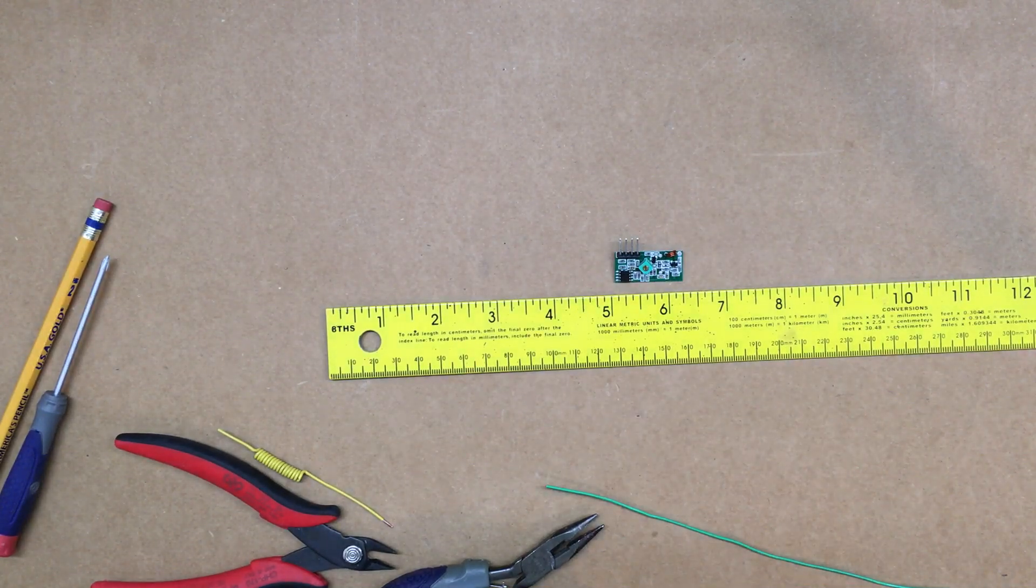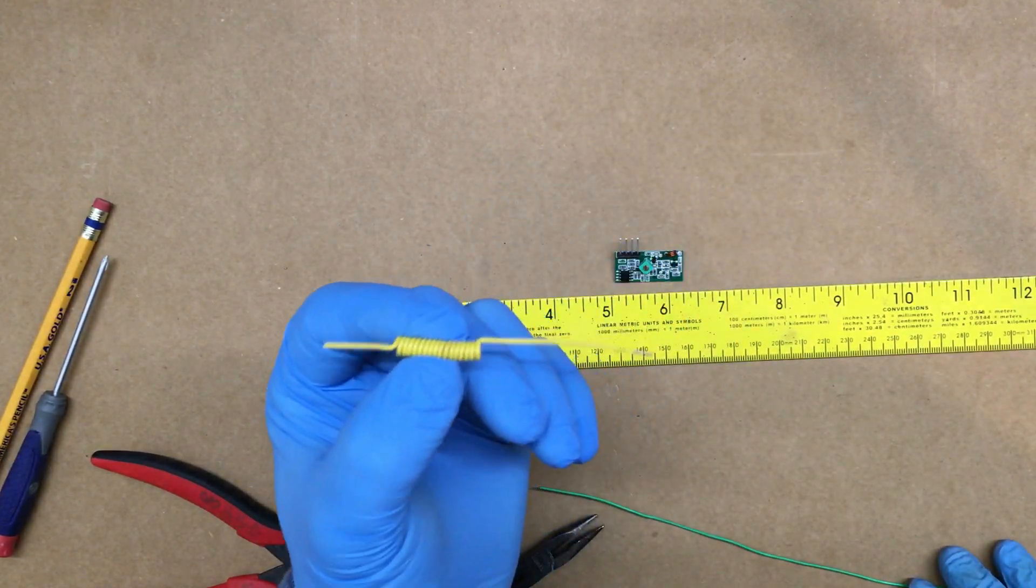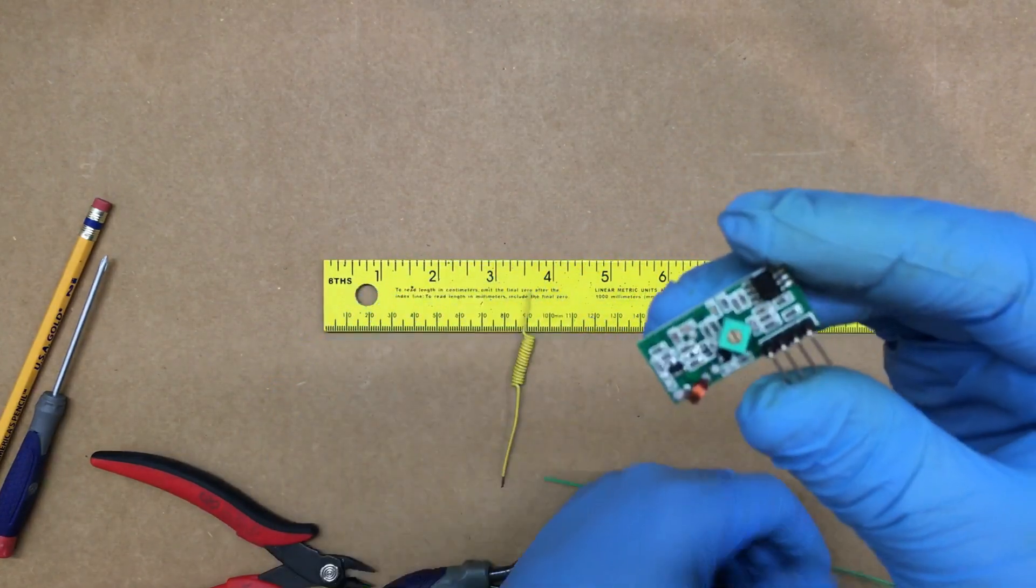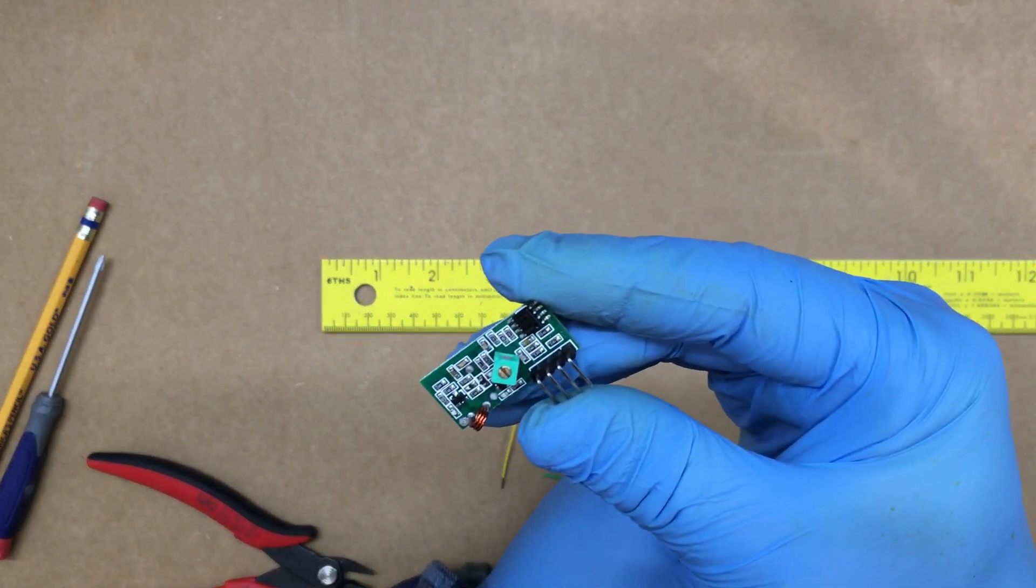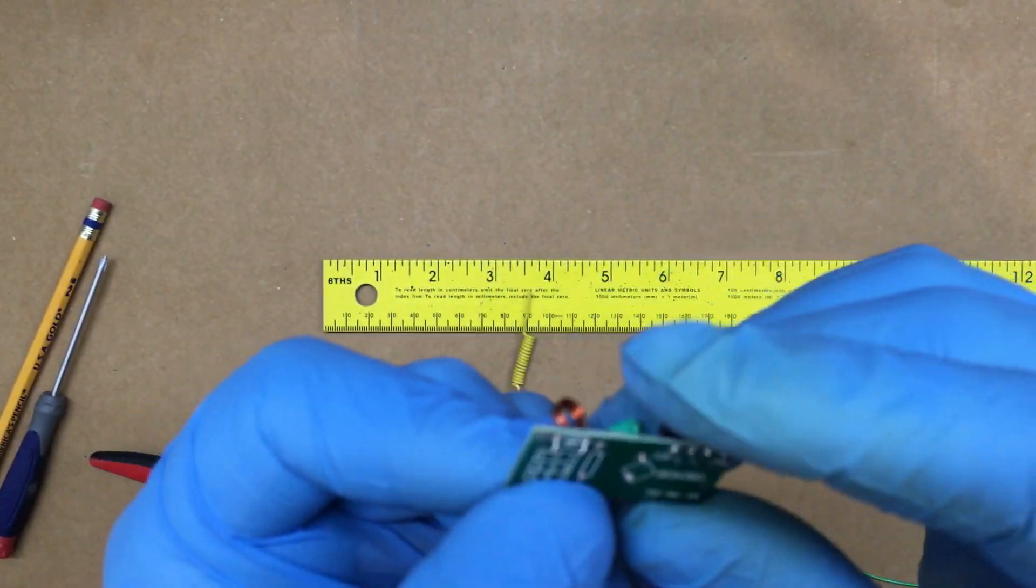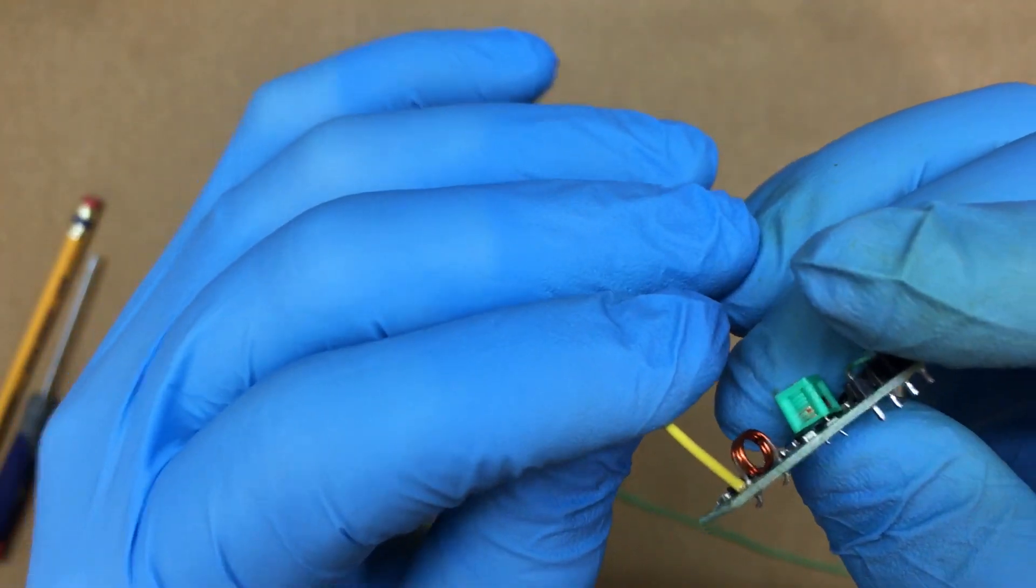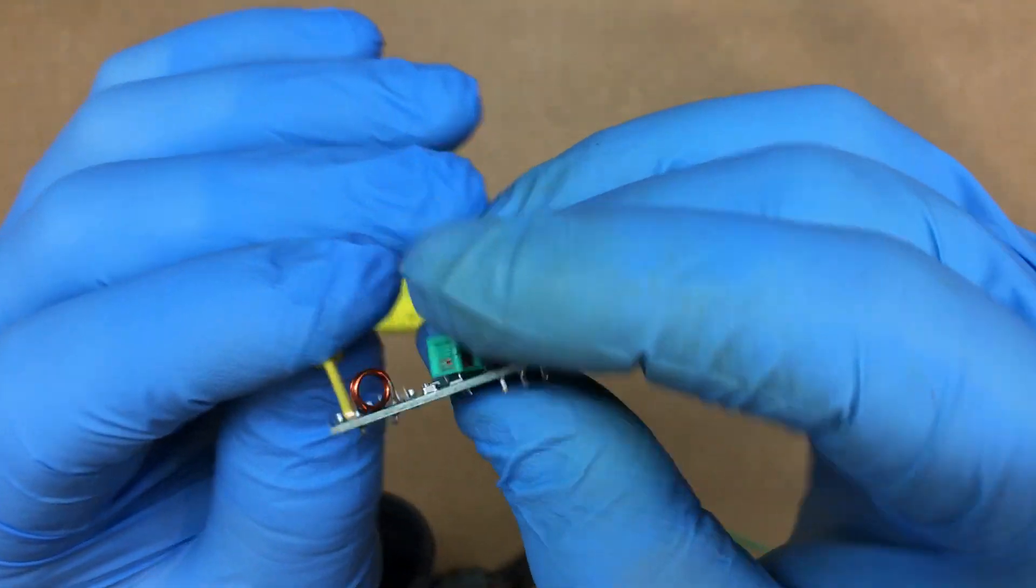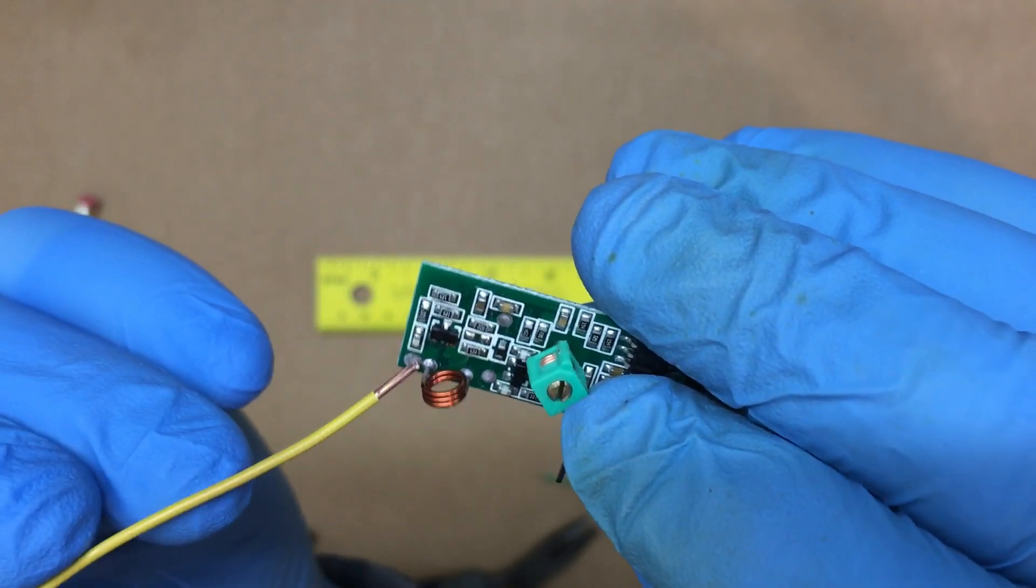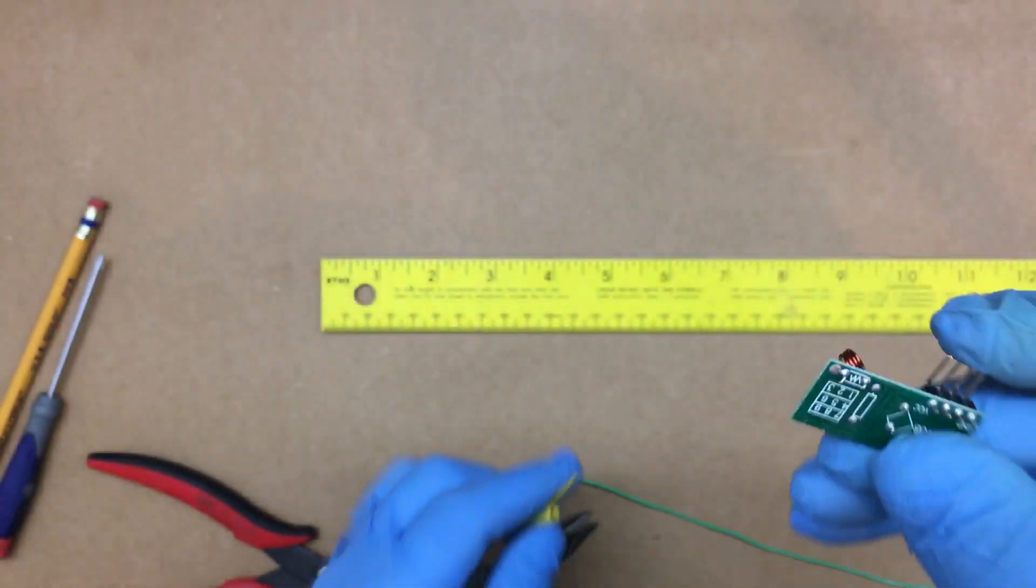Alright, FuzzPiGuy here. I'm going to show you how to make one of these antennas for these little RF receive modules. As you can see, we're going to make an antenna that can be soldered right in here. Let me flip it around - right there. So let's get started.